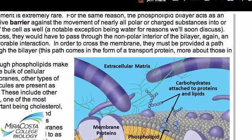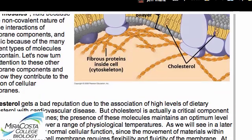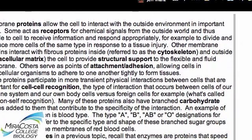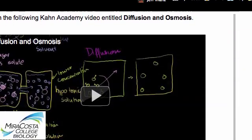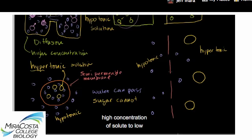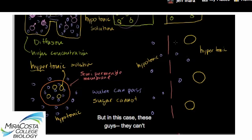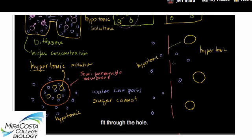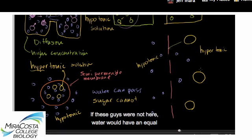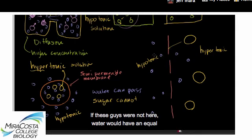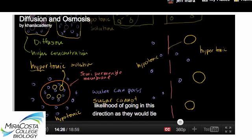Another kind of work that we've talked about at length in a previous module is transport work. That's the pumping of ions or some other solute from areas where they're at lower concentration into an area where they're at higher concentration. I'm guessing—really hoping—that you don't need me to go into the differences between active transport and facilitated diffusion again, but if you need to go back and review those sections, please go right ahead.